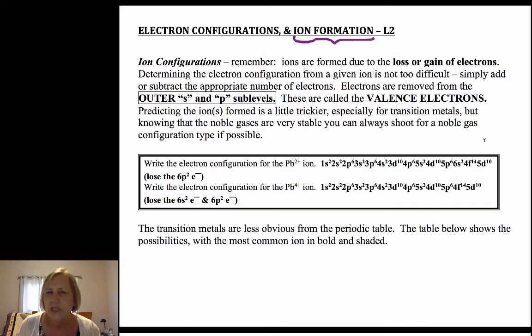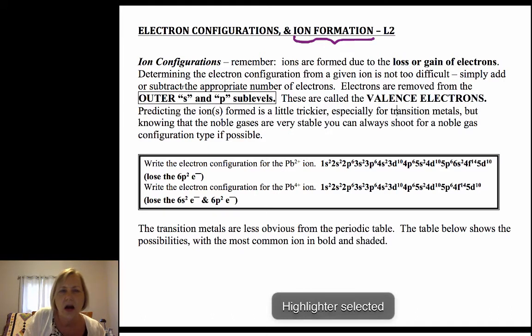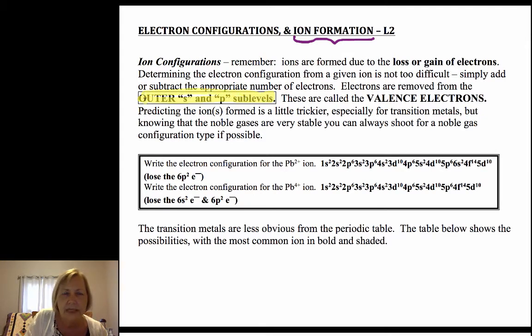When you gain and lose electrons, our focus will always be on those valence electrons. Valence electrons are your outermost S and P, so you find your highest n value and any S and P electrons are called valence electrons. All of the other electrons are referred to as core electrons.